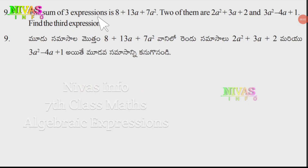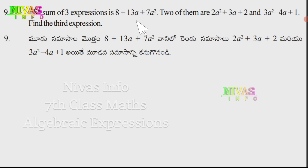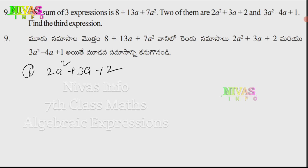Question number 9: The sum of 3 expressions is 8 plus 13a plus 7a². Two of them are 2a² plus 3a plus 2, and 3a² minus 4a plus 1. Find the third expression.